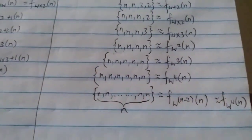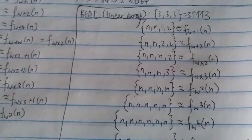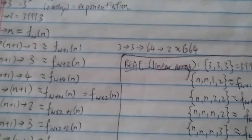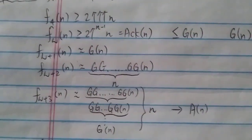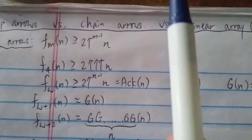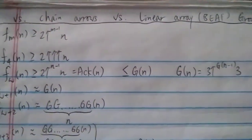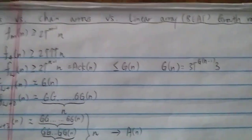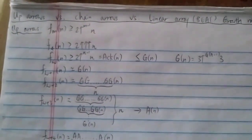So this is a quick video on how the growth rate compares between three notations: up arrows, chain arrows, and linear array BEAF. Thanks for watching and have a nice day!